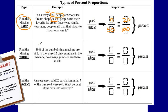30% of the gumballs in a machine are pink. If there are 15 pink gumballs in the machine, how many gumballs are there in all? You can easily see that the percent is going to be 30, so 30 out of 100. Then it says there are 15 pink gumballs — this is your part. We're trying to find out how many total gumballs there are in the machine. When you're trying to find the whole, the bottom part of the first ratio is your variable — it's the unknown.